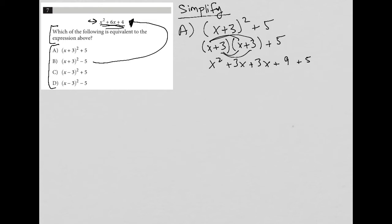So I can pretty much tell already that this is not going to work, because I see at the end here I have 9 plus 5, which is 14. And I know that my answer should just have a plus 4. So in essence, this is going to give me x squared plus 6x plus 14, which is not what I want. So choice A is gone.